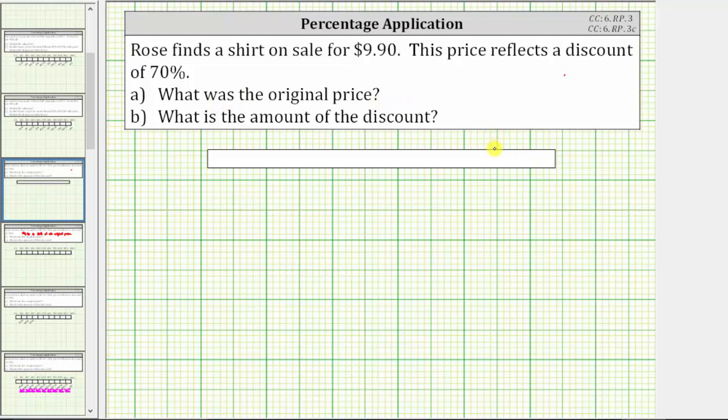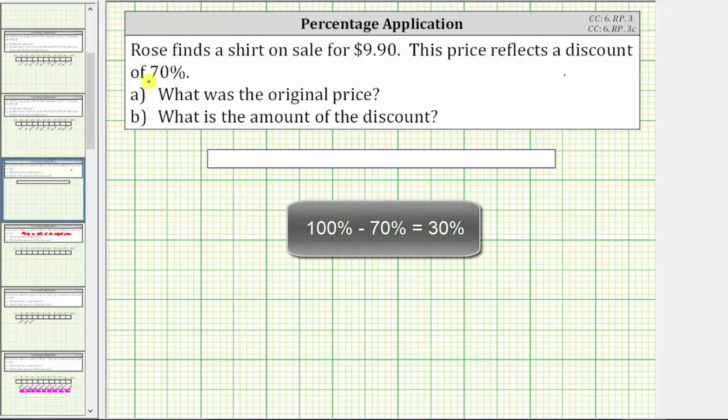Going back to the given information, the sale price of $9.90 is the price after the discount of 70%. And because 100% minus 70% is 30%, $9.90 is 30% of the original price. And this is key to solving this problem correctly.